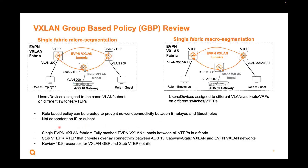This is a single EVPN VXLAN fabric, which means it's fully meshed — all the VTAPs have fully meshed EVPN VXLAN tunnels between them. The resource also supports stub VTAP, which is used for overlay connectivity between static VXLAN grey tunnels, the AOS 10 gateway, and the dynamic EVPN VXLAN orange tunnels. This allows wireless and wired devices to communicate through the stub. This is covered in 10.8, so please review those resources for details.